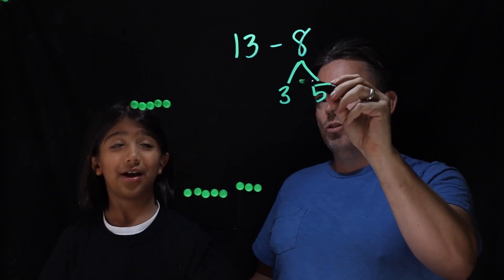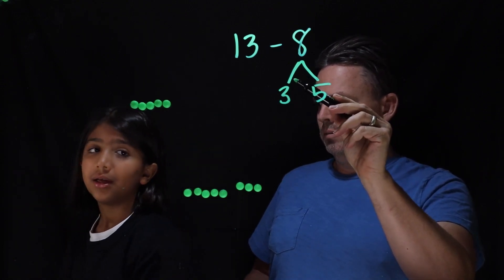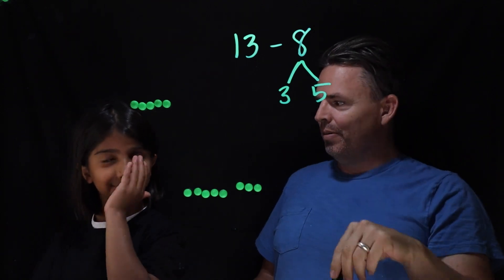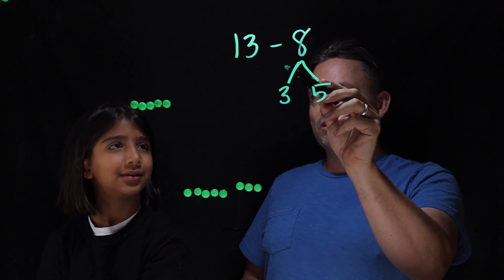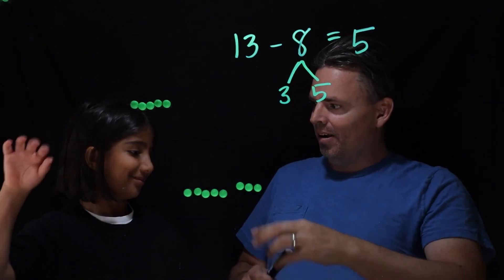And then you took away the 3 and that gave you what? That gave me 10. Ah, and then you took away the 5 more. So what's 13 minus 8? 5. Nice idea, Raja.